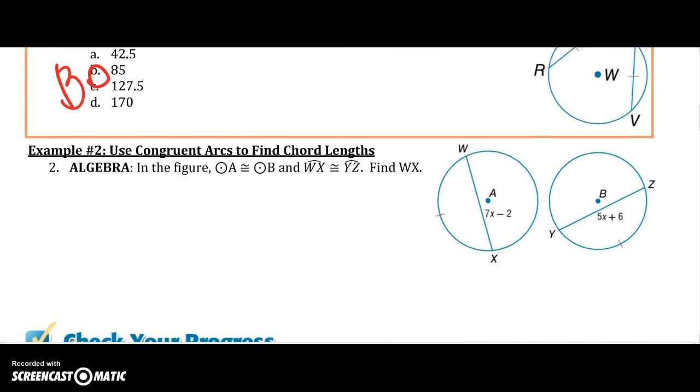All right, let's try another one. In our figure, we know that circle A and circle B are congruent. That means their radii are congruent, so both their radii might be 5 centimeters or 2 centimeters or however much. I know that arc WX, so notice their tick mark still means congruent on an arc, is congruent to YZ's arc.